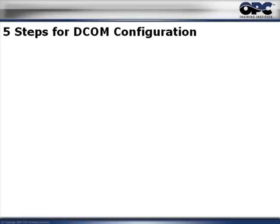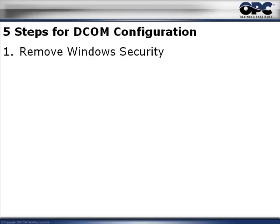There are essentially five steps to get DCOM configured properly to get OPC working between different PCs, and we'll discuss all five of these in this particular presentation. First, we'll remove the Windows security altogether. This is actually what we recommend for all beginners — if you remove the Windows security, you'll have a much easier time getting the DCOM settings configured properly.